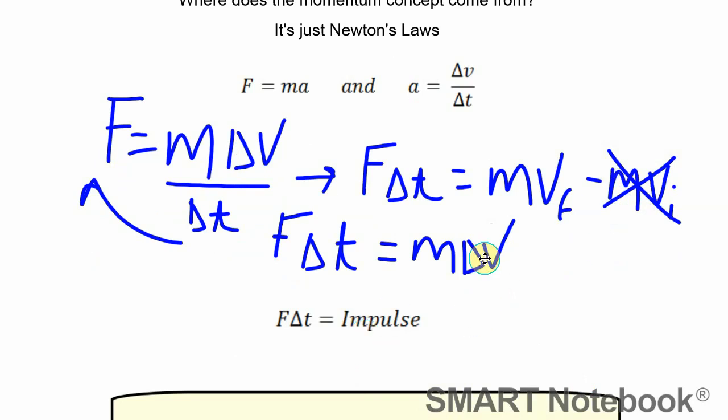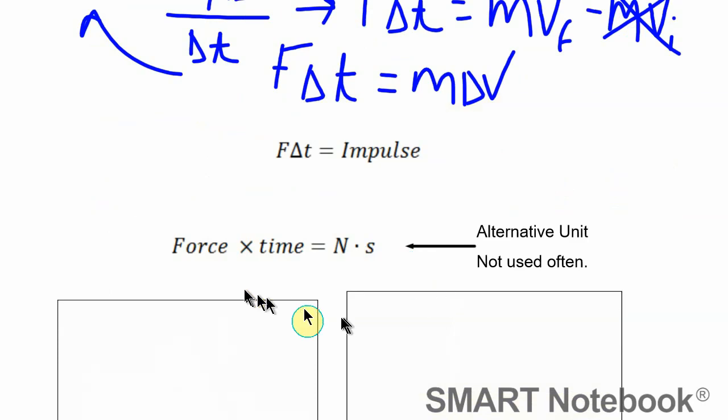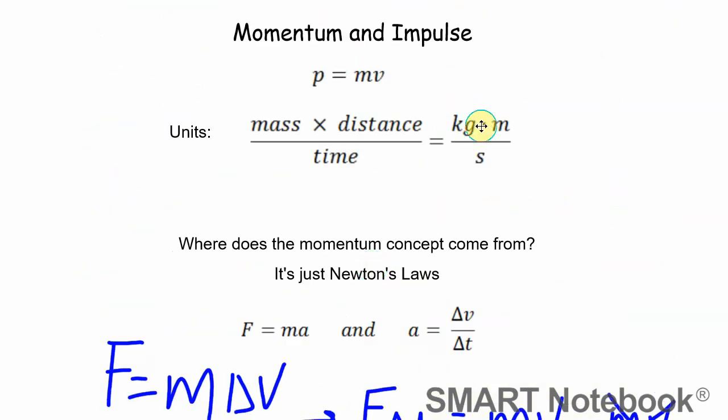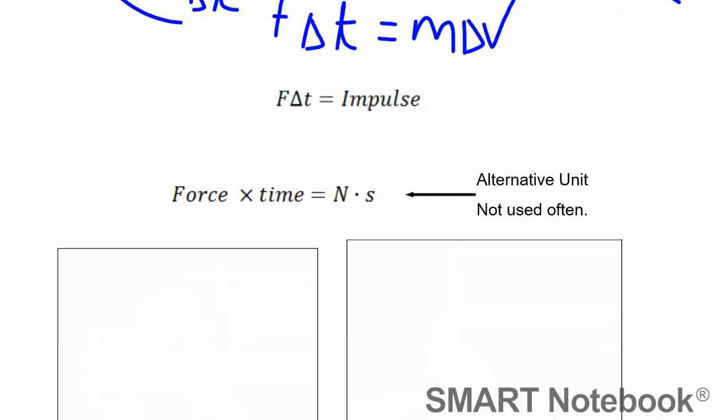For change in momentum, hopefully you're not losing mass, but we'll explore situations where that's possible. You're just doing changes in velocities because usually the mass stays the same. For force times time, you might think newton-seconds would be a good unit to use, and it's used sometimes, but not often. It's exactly the same thing as kilogram meters per second - newton-seconds and kilogram meters per second are the same.